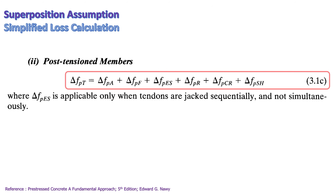In practice, the simplified loss calculation using the superposition assumption as shown here is considered acceptable. Therefore, elastic shortening, creep, shrinkage, friction, anchorage seating, and steel stress relaxation are estimated separately.